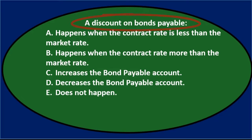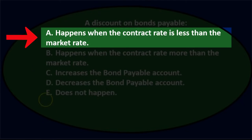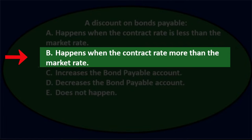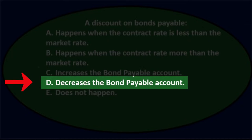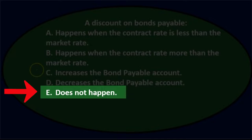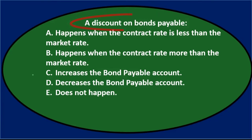First question: a discount on bonds payable — A) happens when the contract rate is less than the market rate, B) happens when the contract rate is more than the market rate, C) increases the bond payable account, D) decreases the bonds payable account, or E) does not happen.